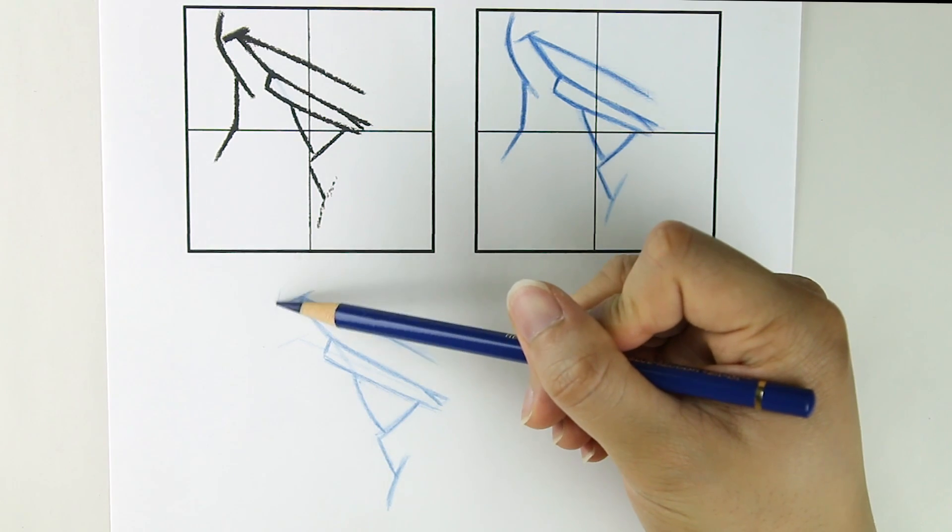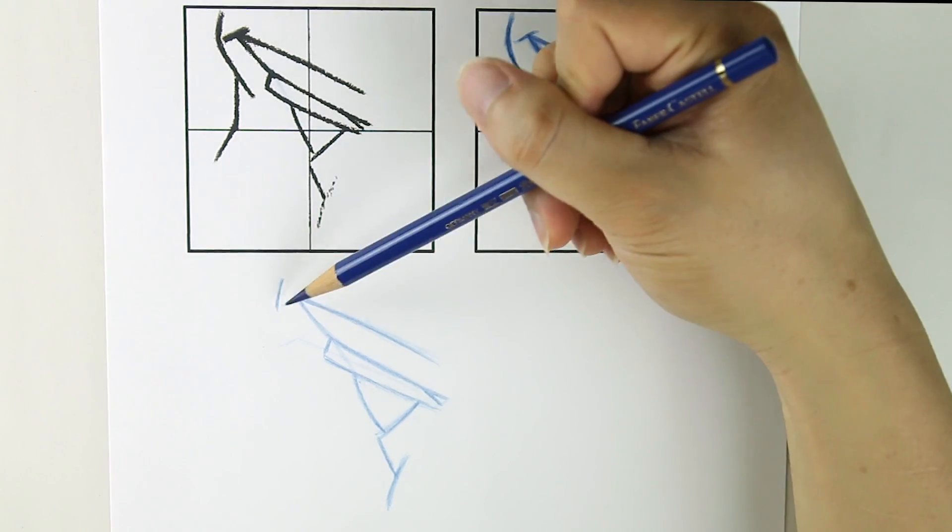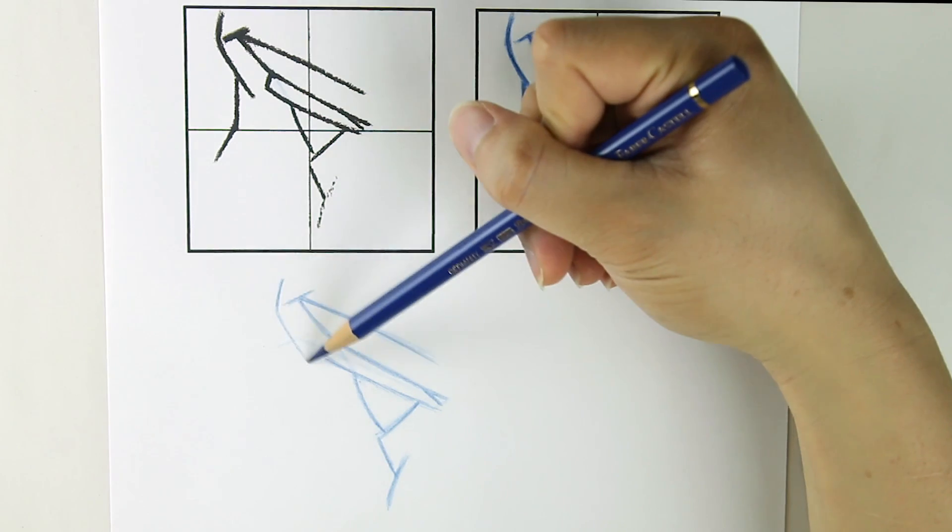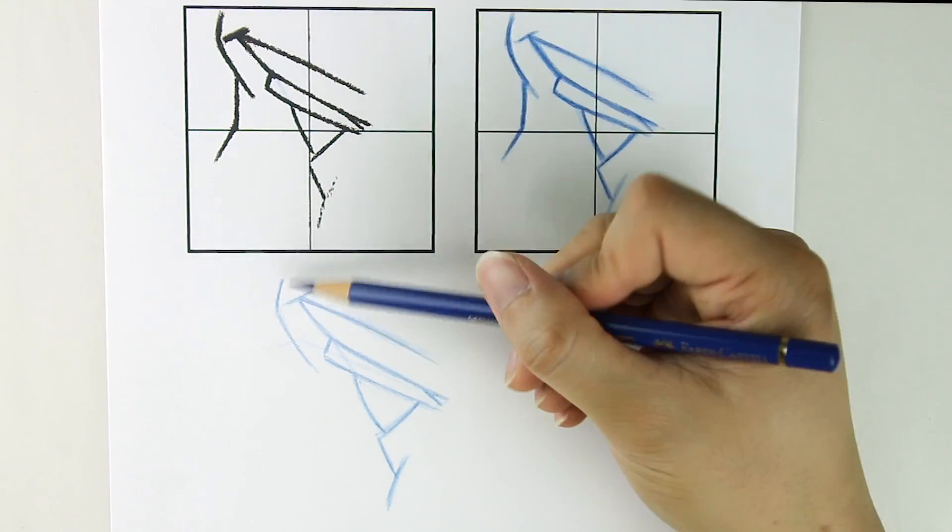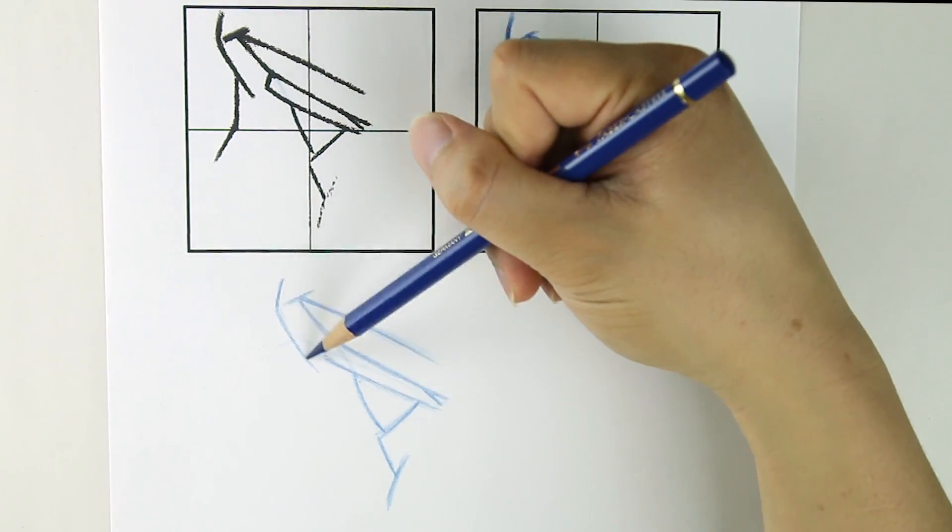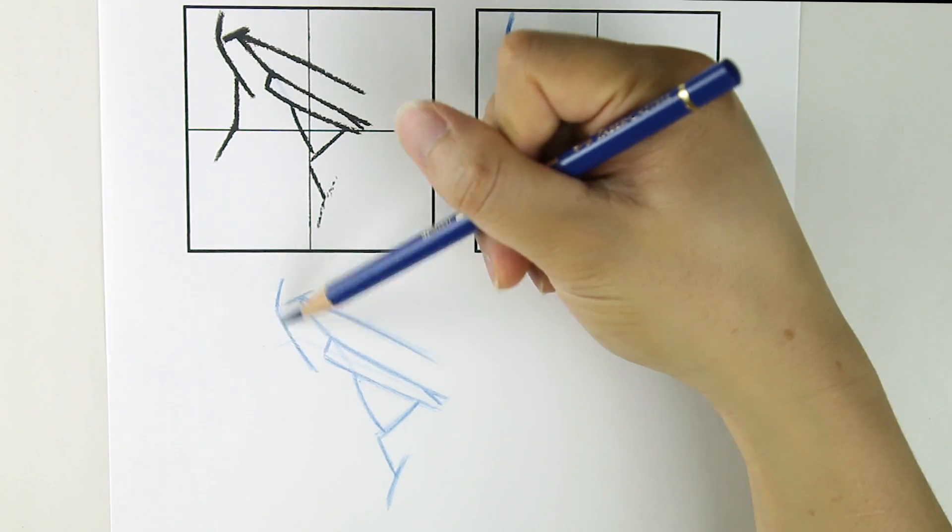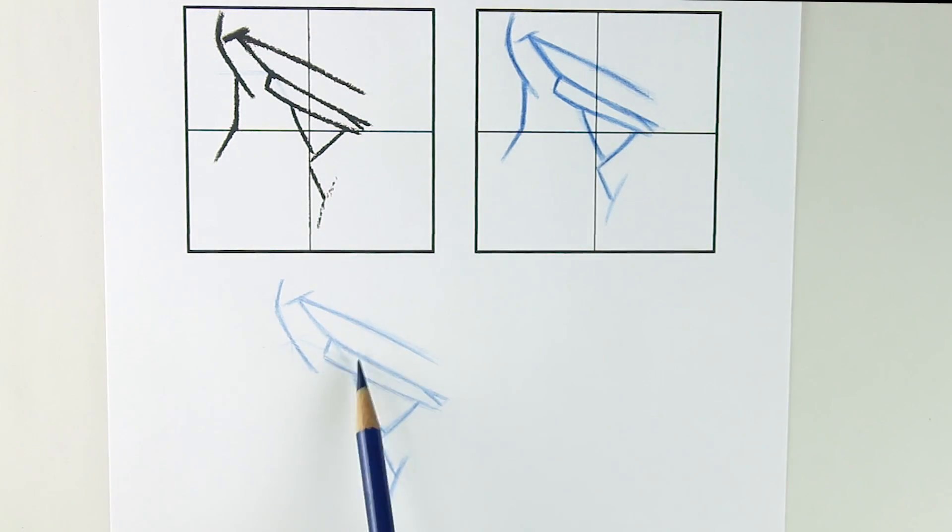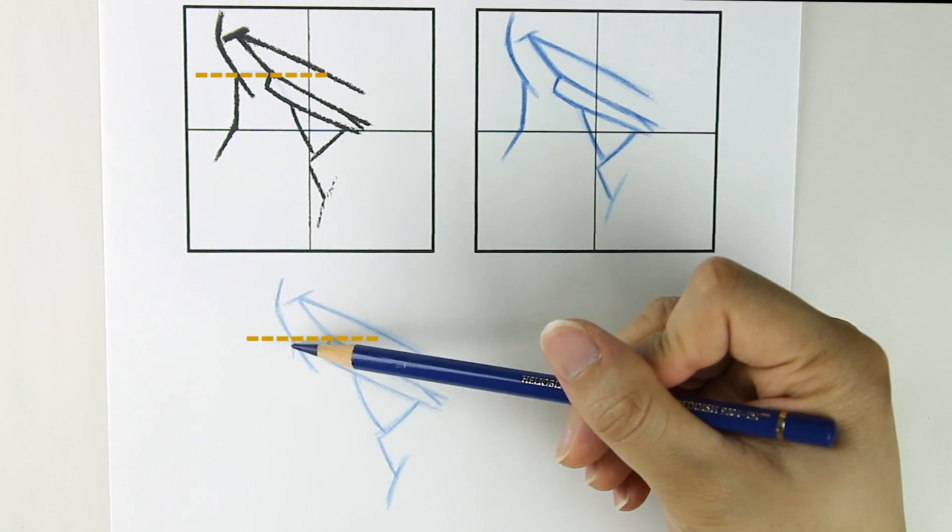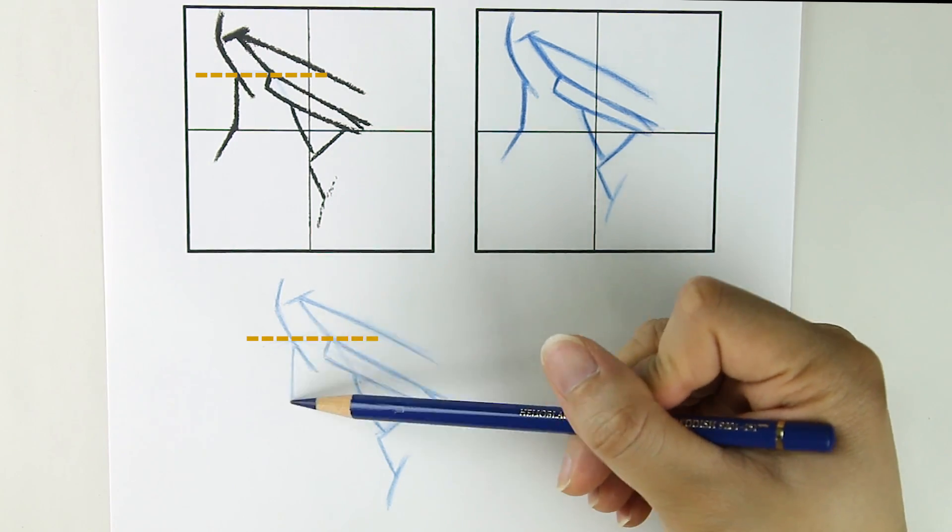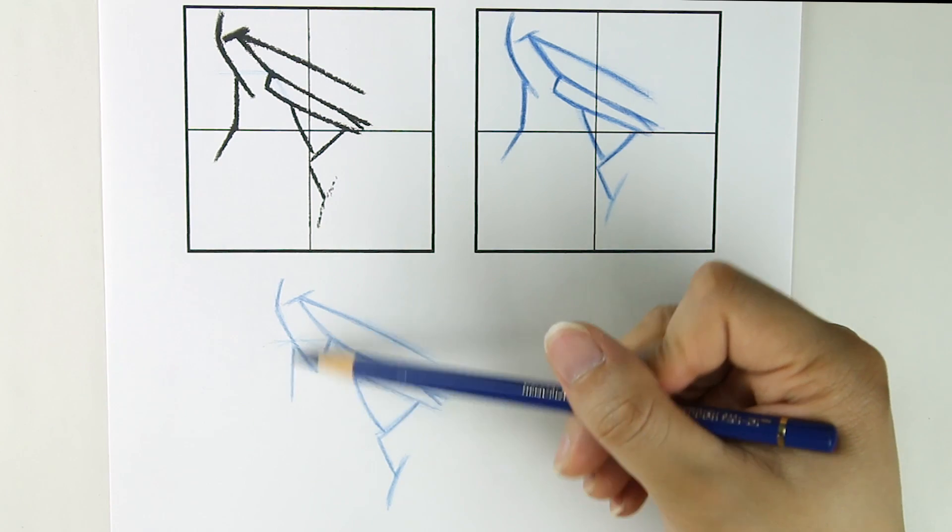I guess technically these are positive shapes since they appear on the subject itself. But whatever, semantics isn't important. The idea is that looking at the space outside the line can help us to spot mistakes. Here, we can notice that this corner of the nose bridge lines up horizontally with this corner of the eyelid. That's going to be really useful in helping us to place that line.